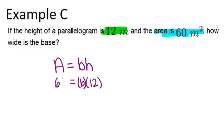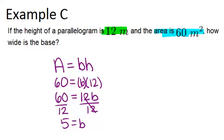But we know that the area is 60 meters squared. We can set up this equation, which is the same as saying 60 equals 12b, which means that 5 equals b. So the base is 5 meters, because meters is the units we're working with in this problem.